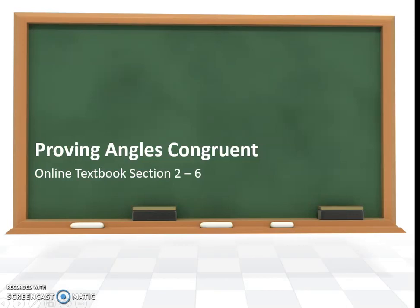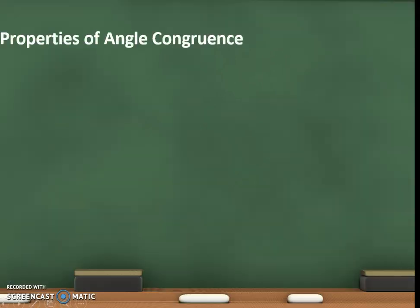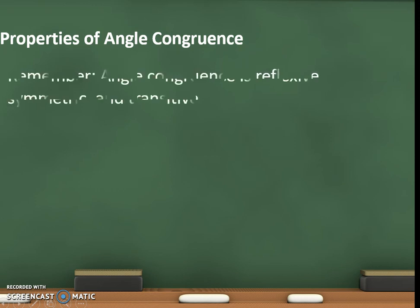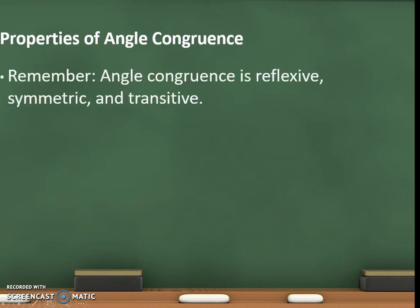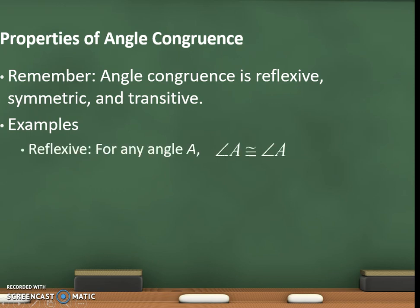Hi guys, we're going to learn about proving angles congruent — that's section 6. Properties of angle congruence. Remember, angle congruence is reflexive, symmetric, and transitive. For example, reflexive: for any angle A, angle A is congruent to angle A.